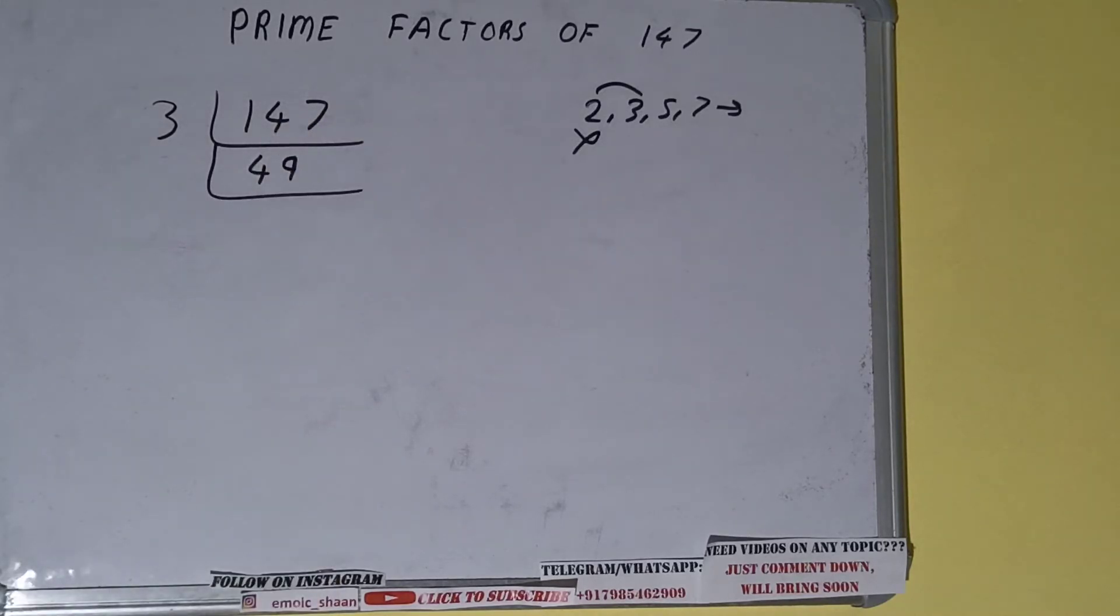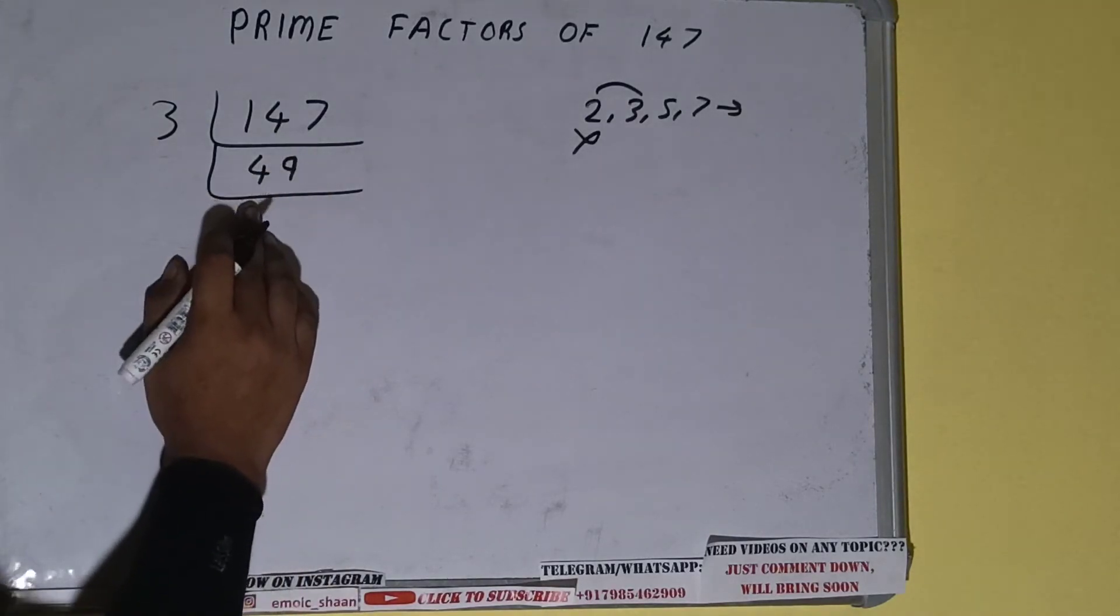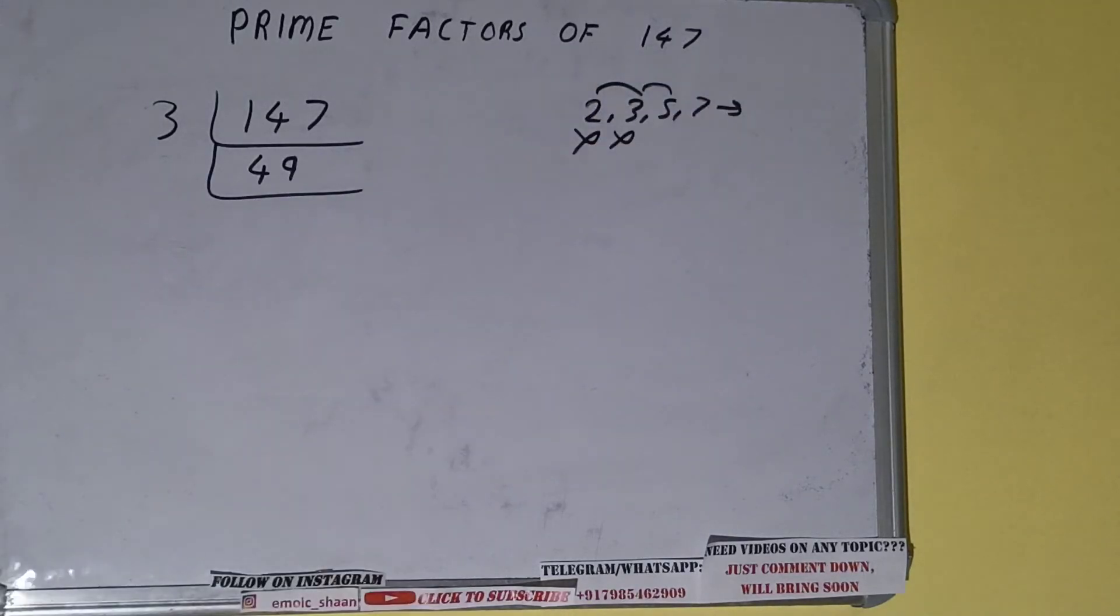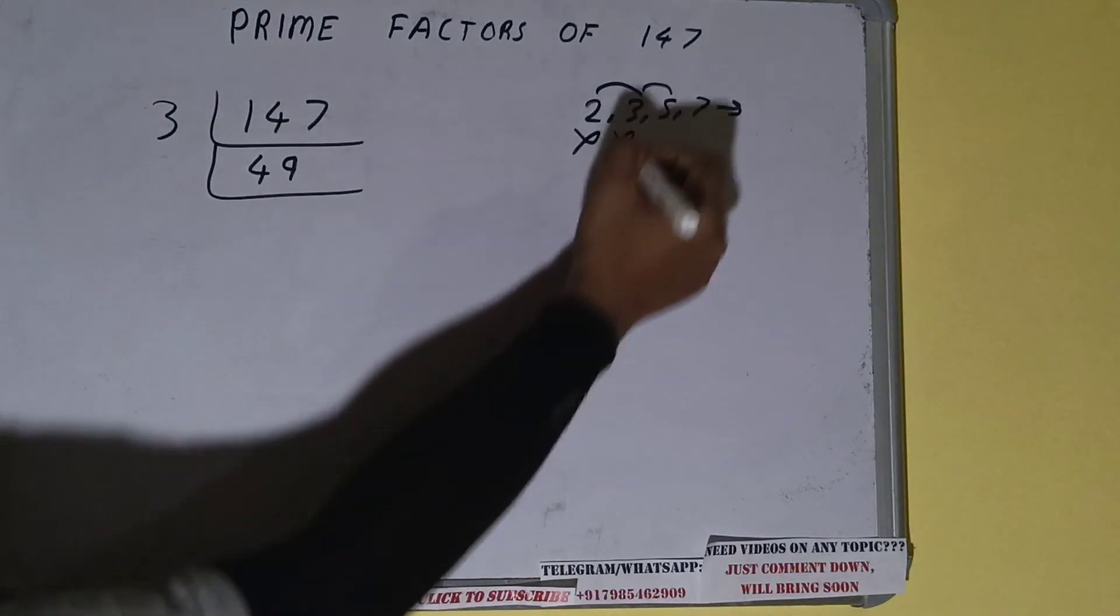Now is 49 further divisible by 3? The answer is no. If we check, 3 once is 3, 19—not divisible. So we'll be going to the next lowest prime number, that is 5. The last digit is neither 5 nor 0, so it is not divisible by 5 as well. So